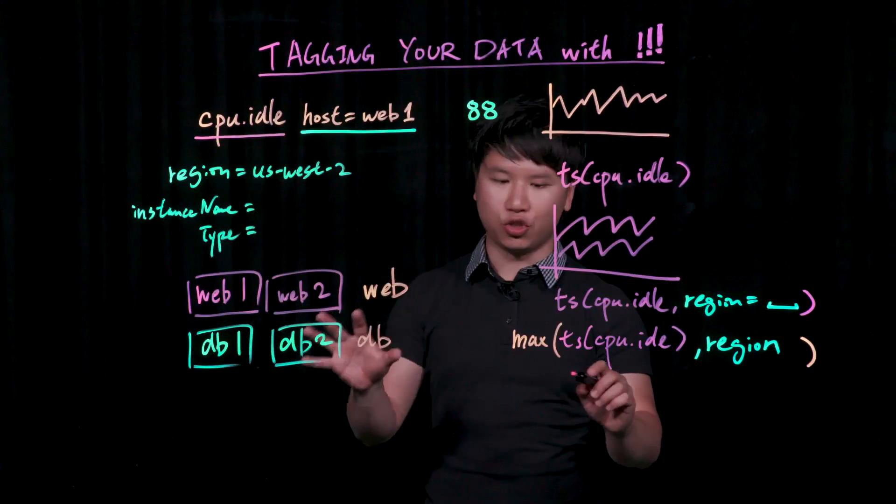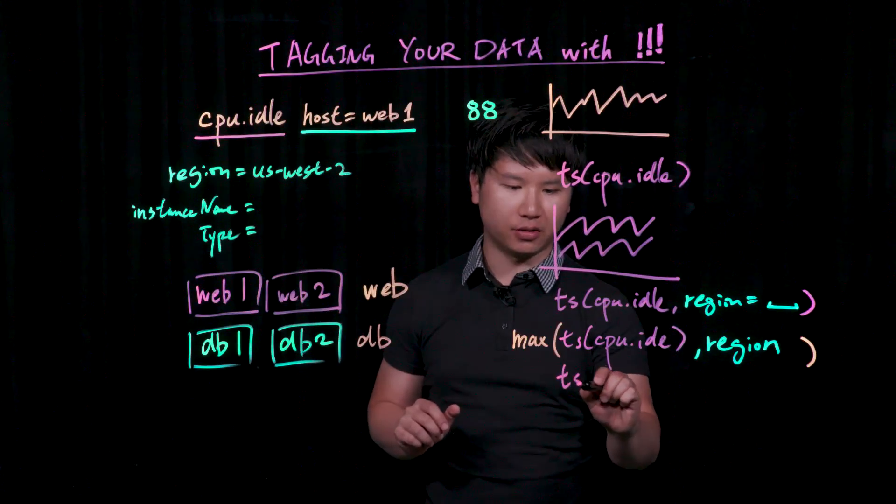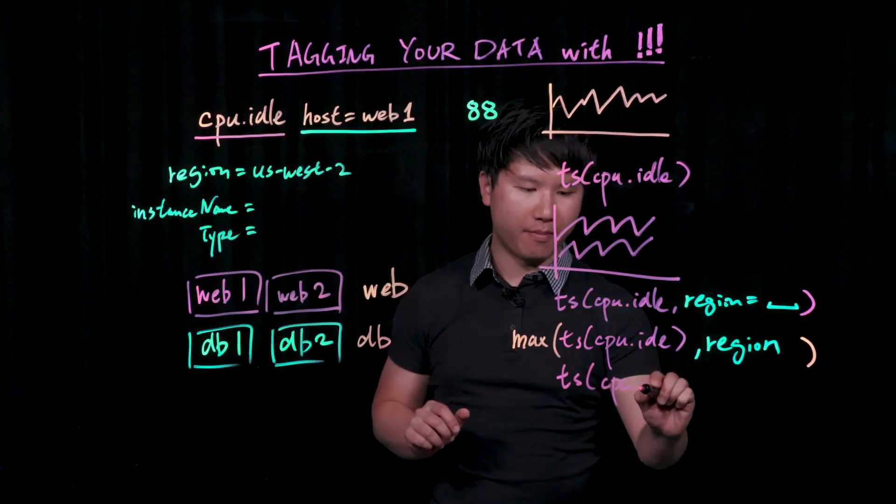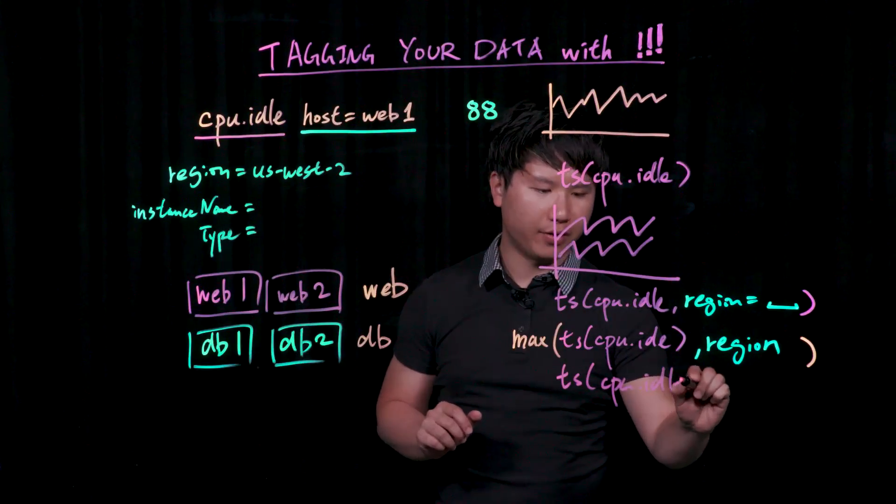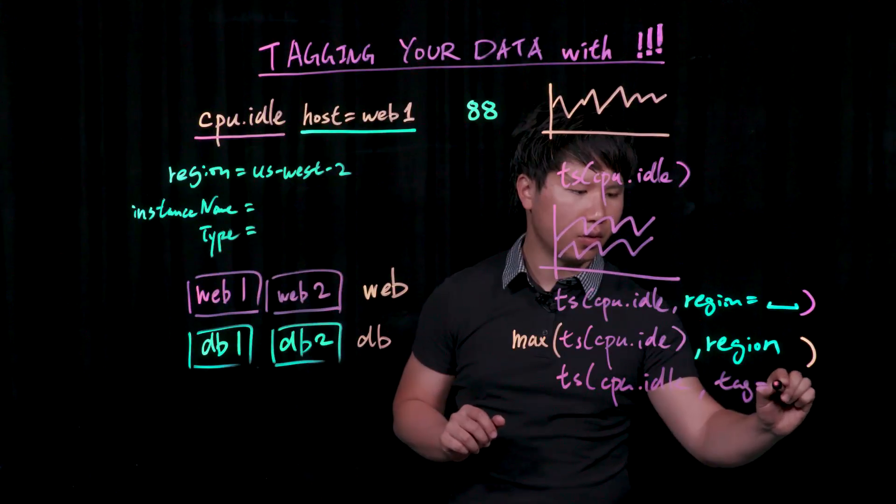So in this particular case, if I were to craft a query, and I want to just look at CPU idle information from my web tier, I would very simply say tag equals web.